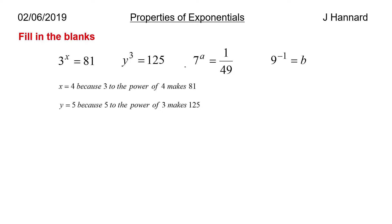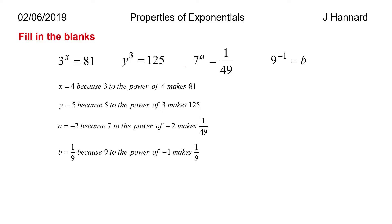What about 7 to the ? equals 1 over 49? I know that 7 squared is 49, so to get 1 over 49 I must put a minus on it. It must be to the minus 2, because 7 to the power of minus 2 is 1 over 49. And 9 to the minus 1 equals b — same logic — that's just 1 over 9.